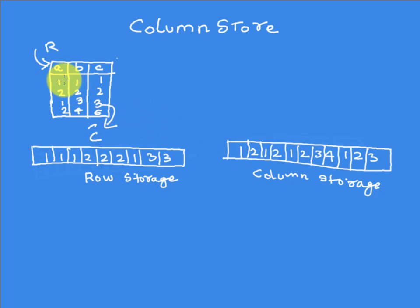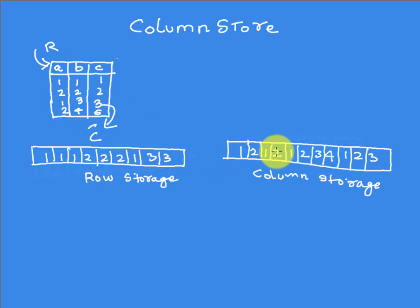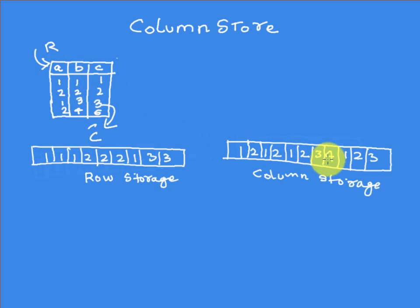Now if you take the column store, you take a column and store it sequentially. So column A — which is 1, 2, 1, 2 — is stored sequentially, then column B — which is 1, 2, 3, 4 — and so on. That is the basic fundamental difference between how you store in row storage versus column storage.